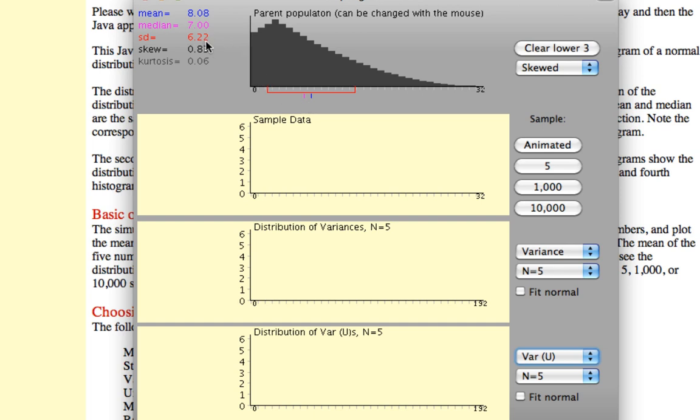So you can see here that the standard deviation of the parent population is 6, roughly. So the variance of the parent population should be about 36.